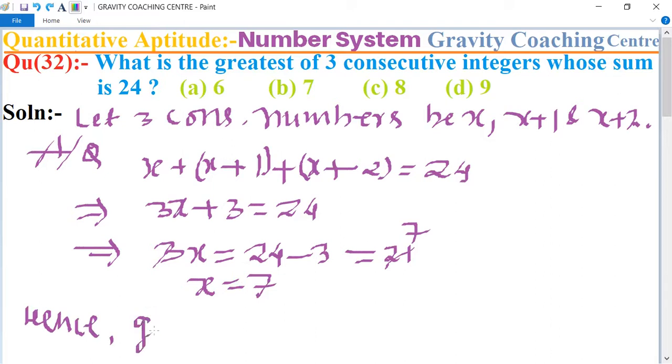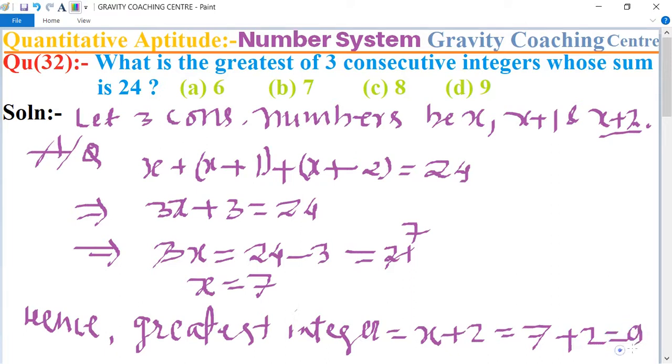Hence, the greatest integer is x plus 2. x plus 2 equals 7 plus 2 equals 9, which is the required answer. So option d is the correct answer.